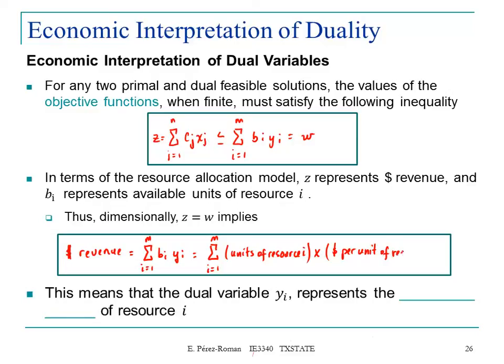Which means the following: this means that the dual variable yi represents the worth per unit of resource i.